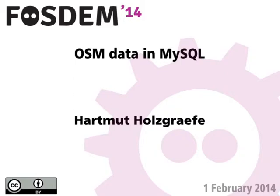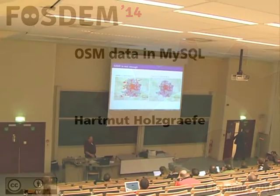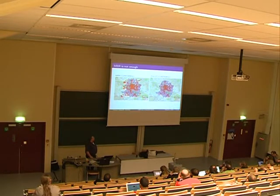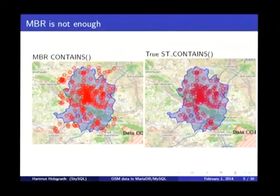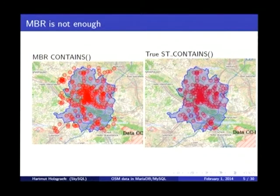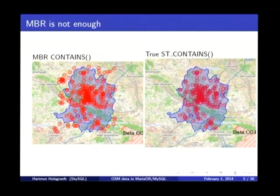That's exactly the bounding rectangle of the shape — the minimum bounding rectangle of the shape. This is what a query like 'give me all the postboxes in my hometown' would produce in older versions of MariaDB. On the right side is what you really want: you only get the shapes inside of the shape.